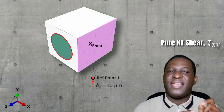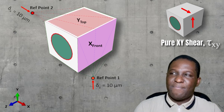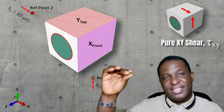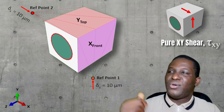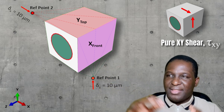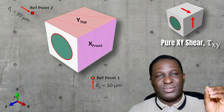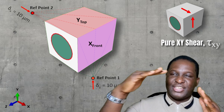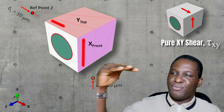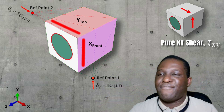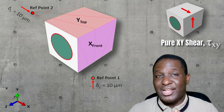I can automatically link the behavior of reference point one to the X front face. On the other side, we have reference point two. For this shear, I will need these two reference points, one and two. On one, I will apply a Y axis loading. On two, I'll apply an X axis loading. I'll kinematically link reference point two to Y top and reference point one to X front. This way you end up having a shear deformation where the X front is moving up and the Y top is moving in the X axis, creating a pure shear deformation.